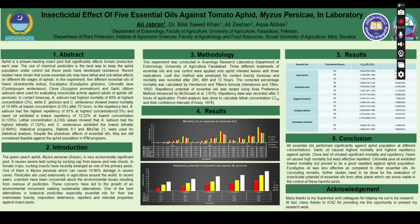Coming straight to the abstract: aphid is a phloem-feeding insect pest that belongs to family Aphididae and order Homoptera. It significantly affects tomato production each year. The use of chemical pesticides against this pest has been common practice among farmers, but these pests have developed resistance over the years. The concern of scientists and the public is towards botanical pesticides, especially essential oils. Recent studies have shown that some of these essential oils may have lethal or sublethal effects on different life stages of aphids.